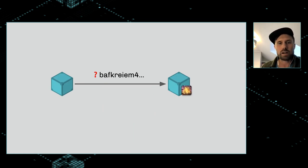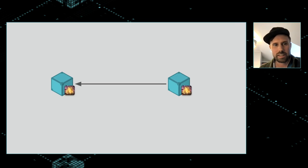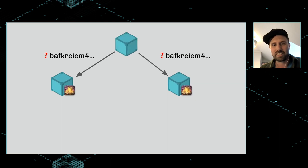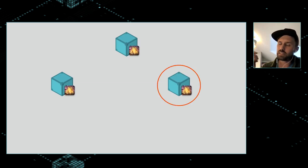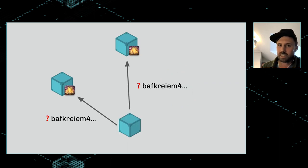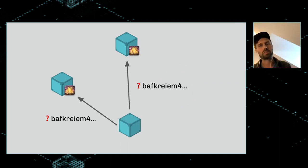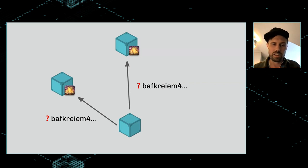So how does this CID thing work? If someone else requests that data by its CID, then they'll receive it, and now two nodes can serve the content. Someone else can come along and get the content, and it means the original node that had the content can actually go away — and the data will still be retrievable from the other nodes.